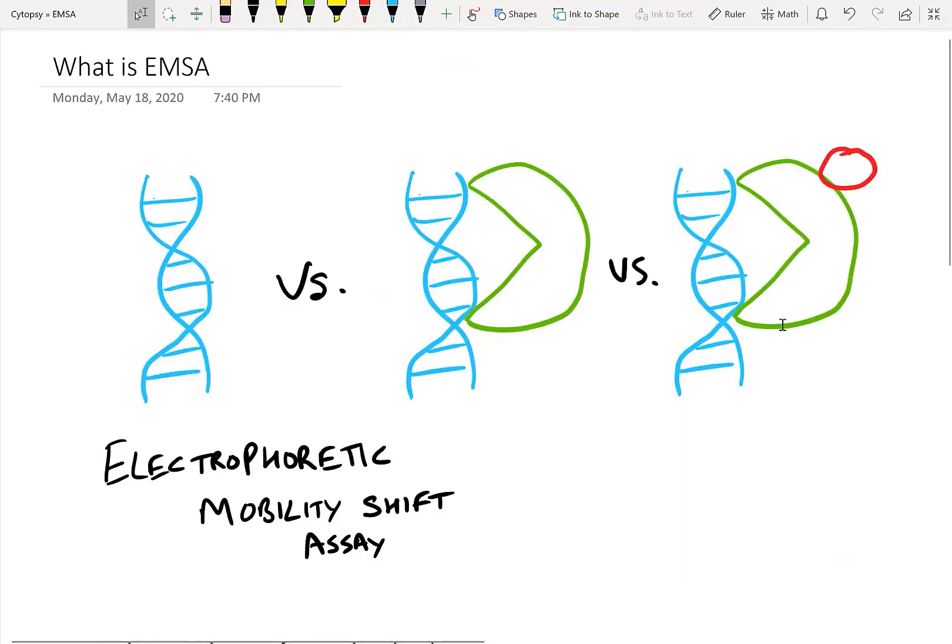So what is EMSA? EMSA stands for electrophoretic mobility shift assay. Let's break this down. Electrophoretic - that sounds like electrophoresis. If you don't know what gel electrophoresis is, make sure you check out my other YouTube video about gel electrophoresis where we break it down step by step.